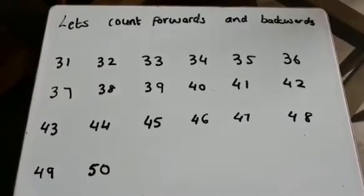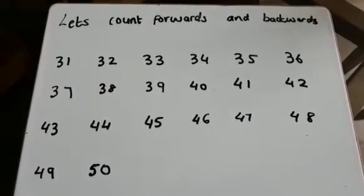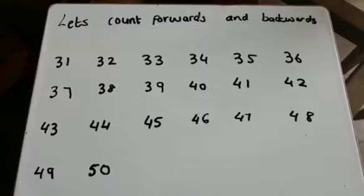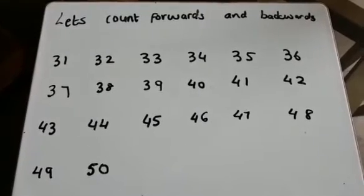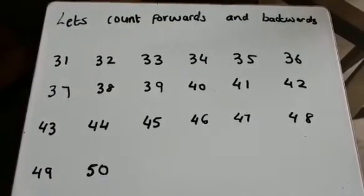Let's count forwards and backwards. Pause the video and count forwards from 31 all the way to 50, and then count backwards from 50 all the way to 31.